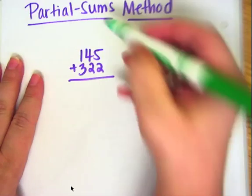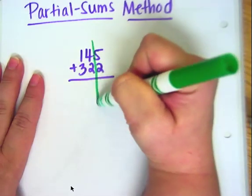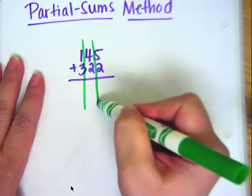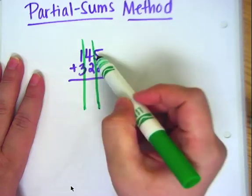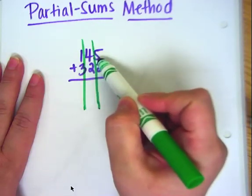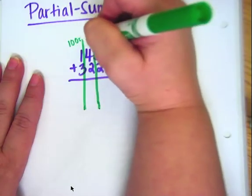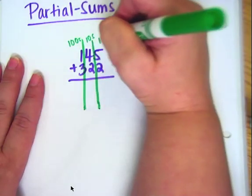Now this is my problem, and I'm going to make columns. You see that in the green, we're making columns to separate the ones place from the tens place from the hundreds place. I'll go ahead and write that down: hundreds, tens, and ones.